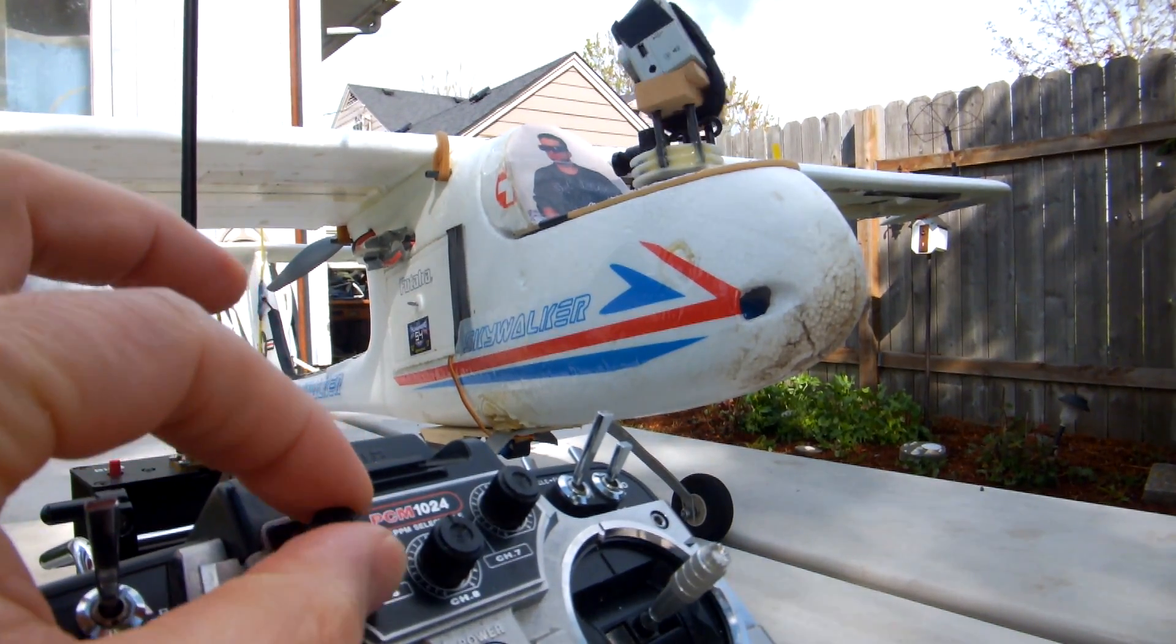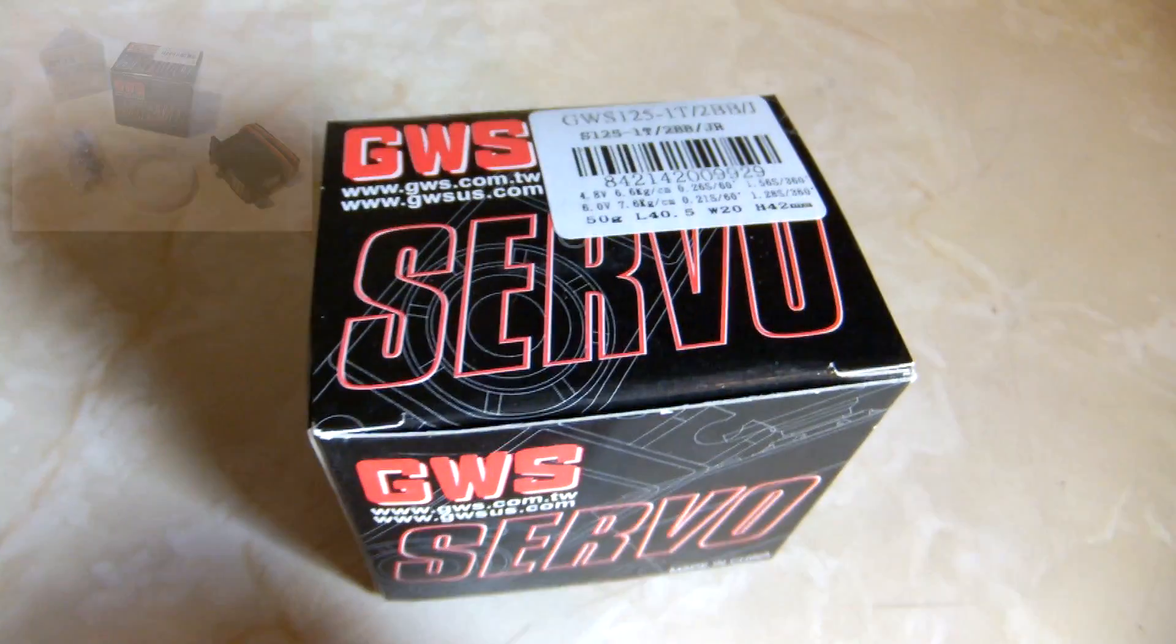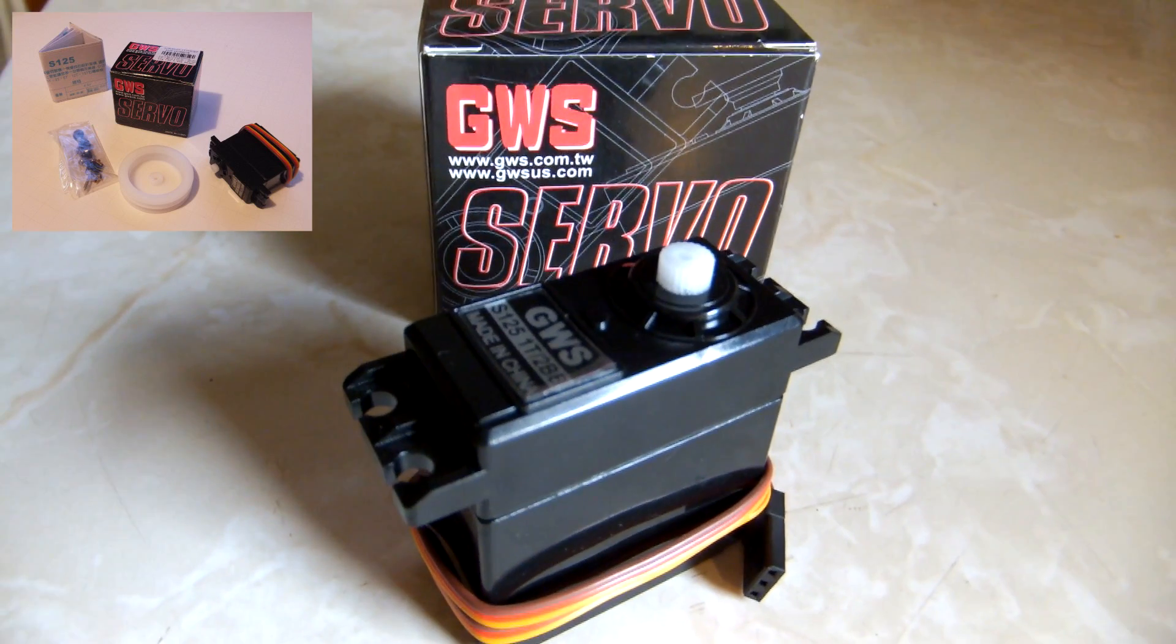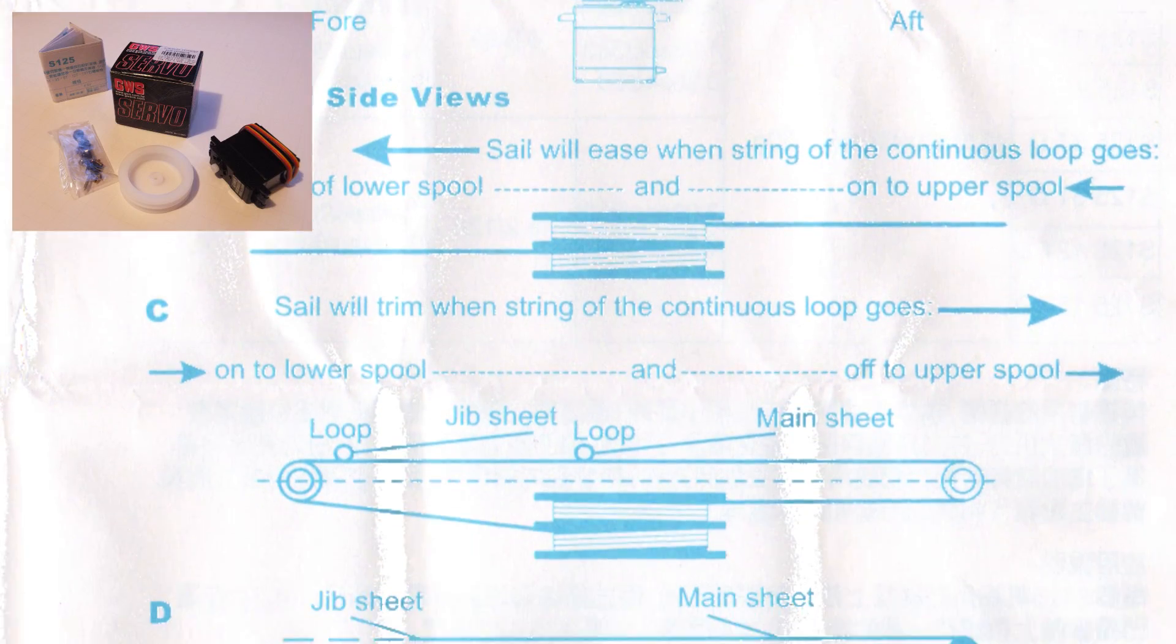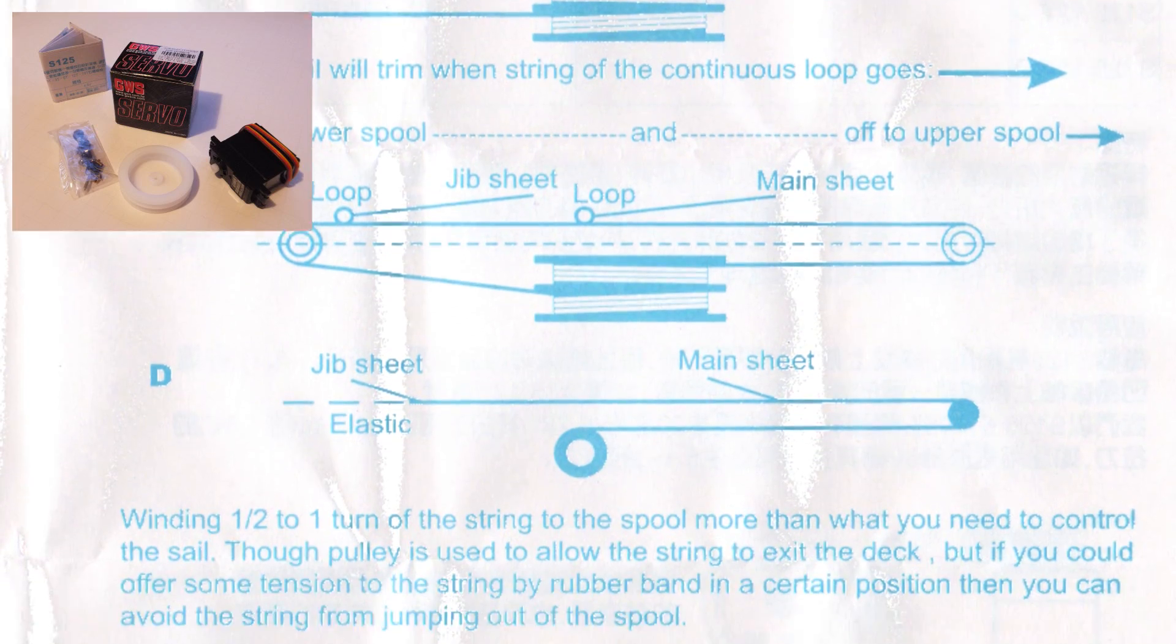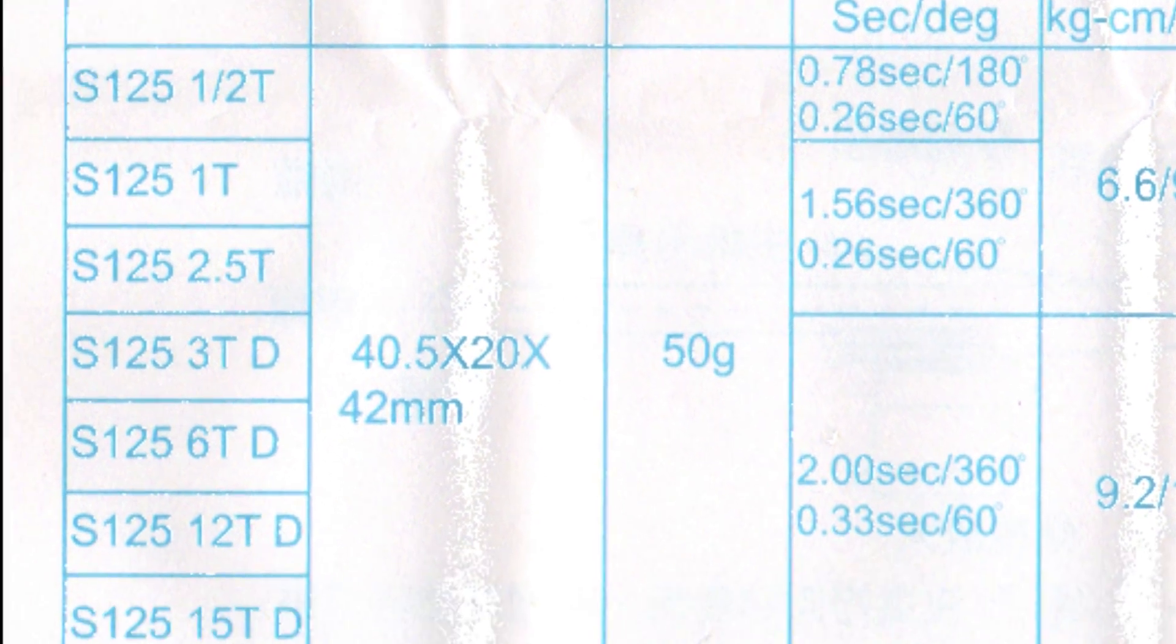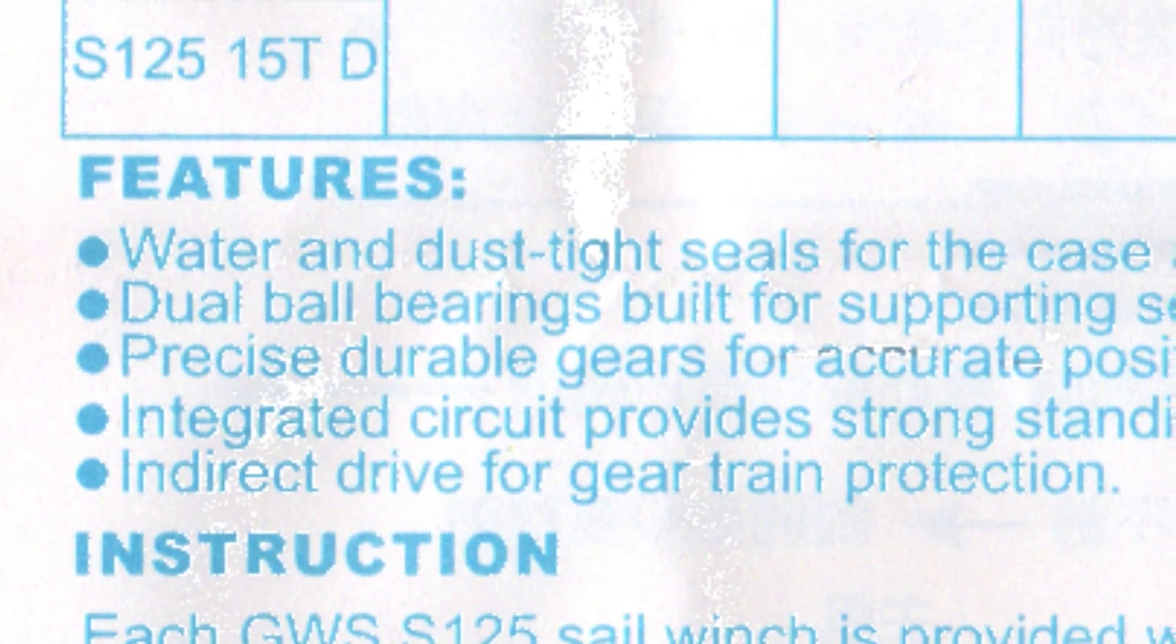First of all you need a good servo. The one I chose and highly recommend is the GWS 125 1T 2BB sail winch servo. It's called a sail winch servo because it is a 360 degree high torque servo which is normally used for winching sails. The 1T designation means it can do one complete turn and the 2BB designation means dual ball bearings.